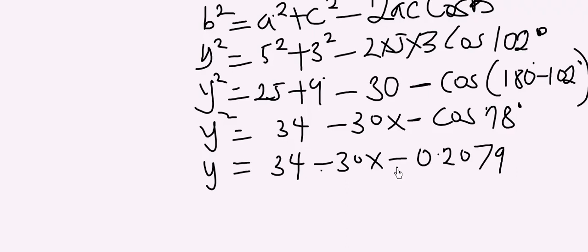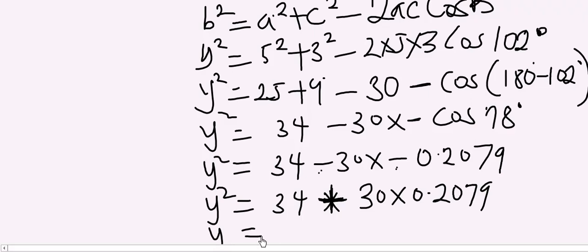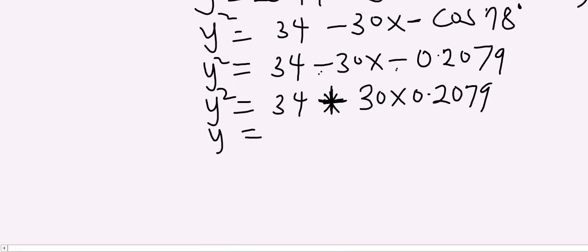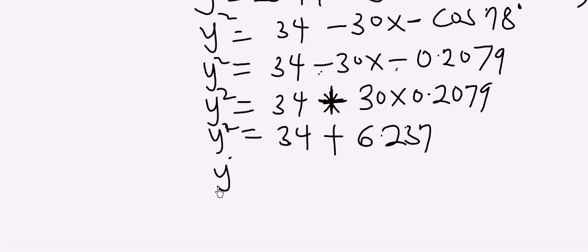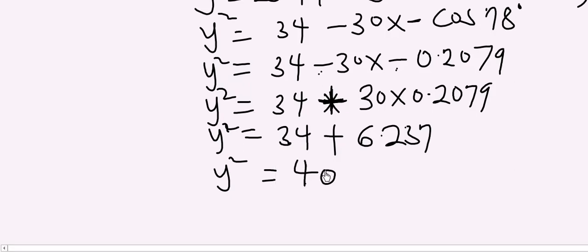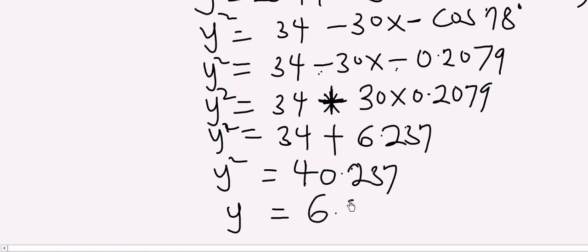So Y squared equals 34 minus 30 times minus 0.2079, which is the cosine value for 78. Minus times minus gives plus, so we have 34 plus 30 times 0.2079. Y squared equals 34 plus 6.237, which is 40.237. Taking the square root gives Y equal to 6.343 cm.